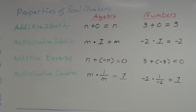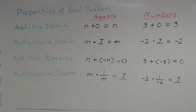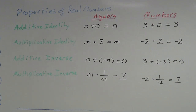So those are four of the properties of real numbers: additive identity, multiplicative identity, additive inverse, and multiplicative inverse. We'll see you next time.